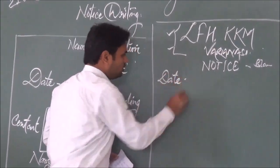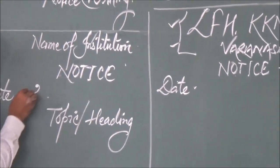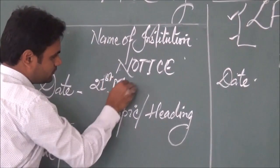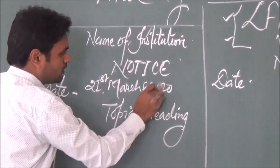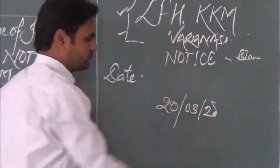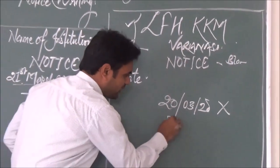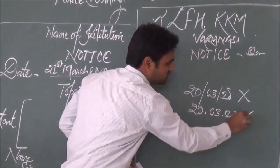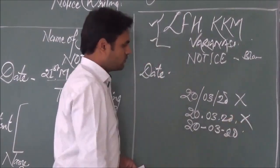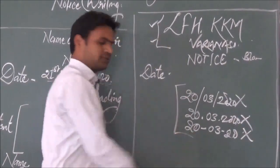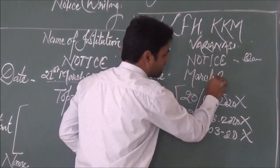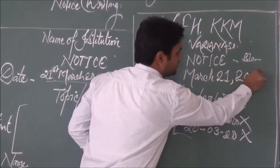Next is the date. The correct format for the date is: 21st March 2020. Sometimes people write 20/03/20 — that is incorrect. Writing 20.3.20 is also incorrect. Writing 20-3-20 is also incorrect. These are incorrect formats for formal writing. The correct formats are: 21st March 2020, or March 21st, 2020.